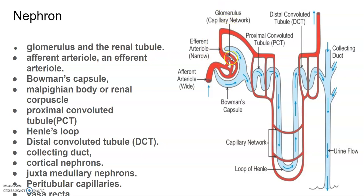The glomerulus is a tuft of capillaries formed by the afferent and the efferent arteriole. The afferent arteriole is a fine branch of the renal artery, and the blood from the glomerulus is carried away by the efferent arteriole — blood is carried in by the afferent and carried away by the efferent arteriole.